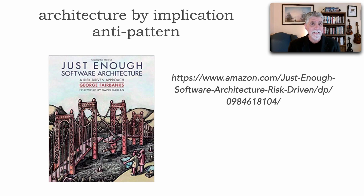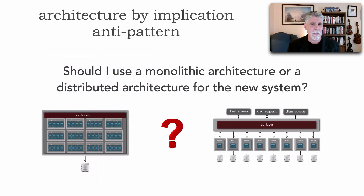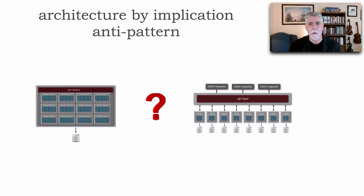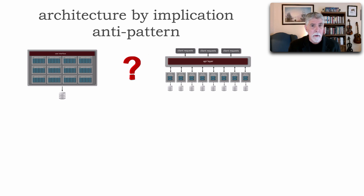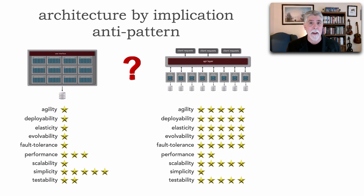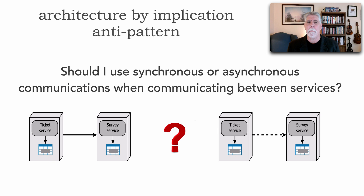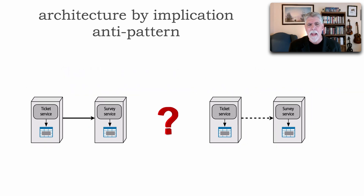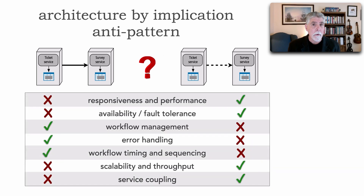When we start building systems, we face a lot of questions. For example, should I use a monolithic architecture or a distributed architecture for the new system? Without an architecture in place, we might just start coding or imply a certain architecture style. Each of these has different characteristics — five stars being the best, one star not really supported. If elasticity is a major concern, we might make the wrong choice. Even things like: should I use synchronous or asynchronous communication between services? It turns out this decision does, in fact, influence architecture.